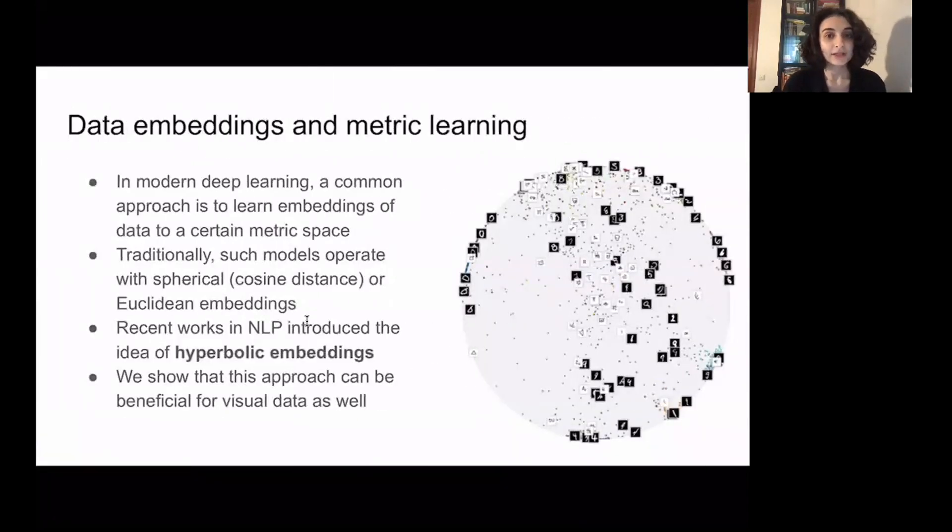In many computer vision tasks it is common to embed data to certain metric space, and usually it is Euclidean or spherical space. Recently several papers showed that one can also use hyperbolic spaces for data embeddings. In our work we show that embeddings to hyperbolic spaces can be also beneficial for visual data as well.